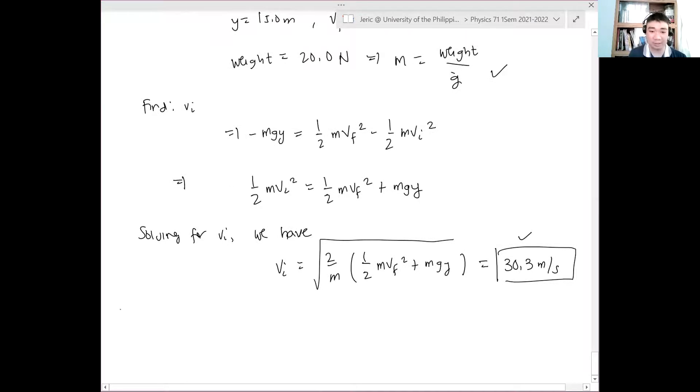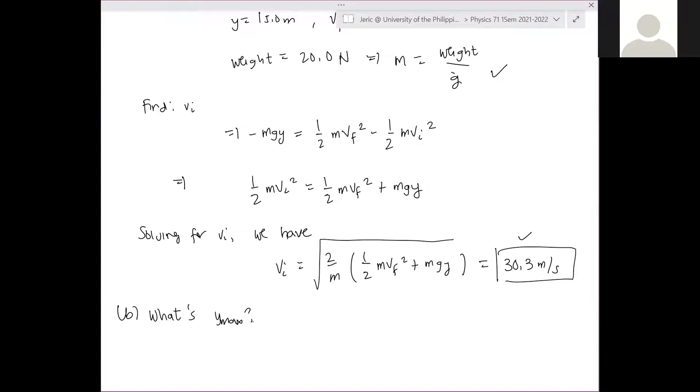Now, letter B. What about the final? What is the maximum height? Ano ulit ang definition natin ng maximum height? Anong ibig sabihin pag nasa maximum height ang some object? Zero velocity. The velocity, and that is the horizontal, the vertical component of the velocity is zero. So this means that V max is equal to zero.